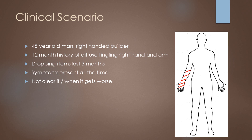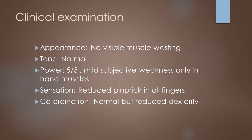The clinical scenario here is of a 45-year-old man who is a right-handed builder. He has a 12-month history of diffuse tingling in the right hand and up the arm and has been dropping items for the last three months. Symptoms are present all the time and it's not clear if and when it gets worse.